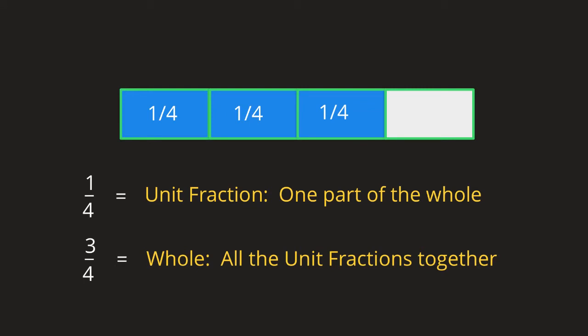Here's what you need to understand. This is the terminology. A unit fraction is one part of the whole. So 1 fourth, that's one unit fraction. The whole in this case is 3 fourths. It's all of the unit fractions put together. The whole is really a fraction. That's made up of 1, 2, 3 unit fractions.